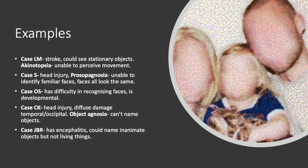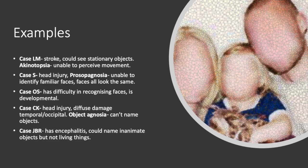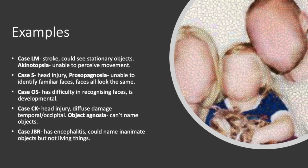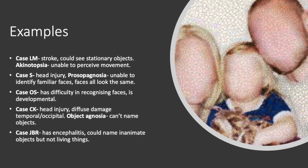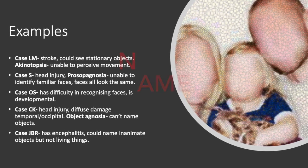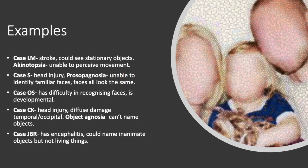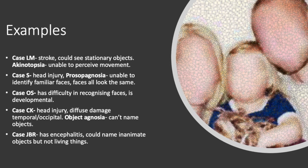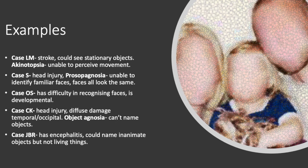Case OS had difficulty in recognizing faces as well, but this was more developmental in nature. Case CK had a head injury and diffuse damage to the temporal occipital region, resulting in object agnosia — an inability to recognize objects. Case JBR had encephalitis which affected similar regions to case CK, but had the ability to name inanimate objects though not living things.